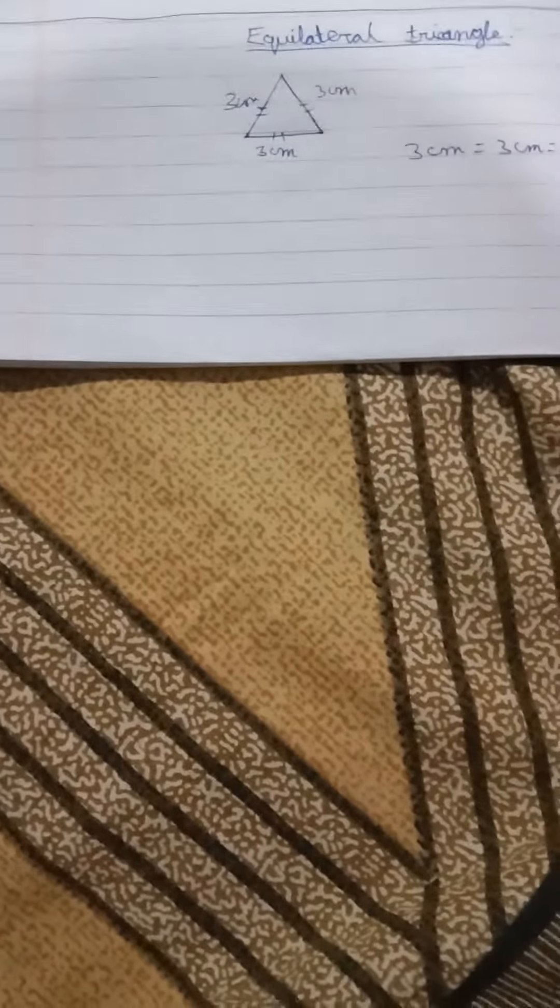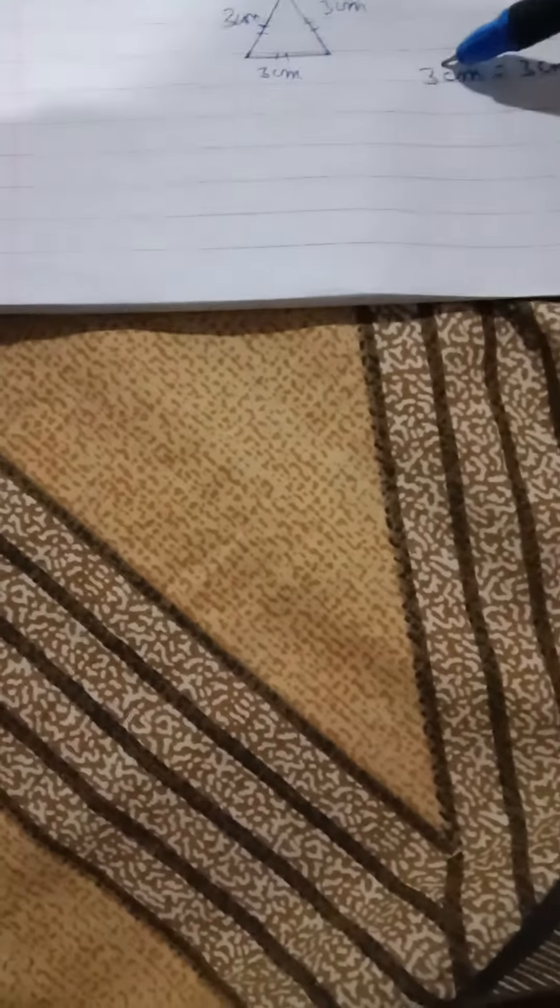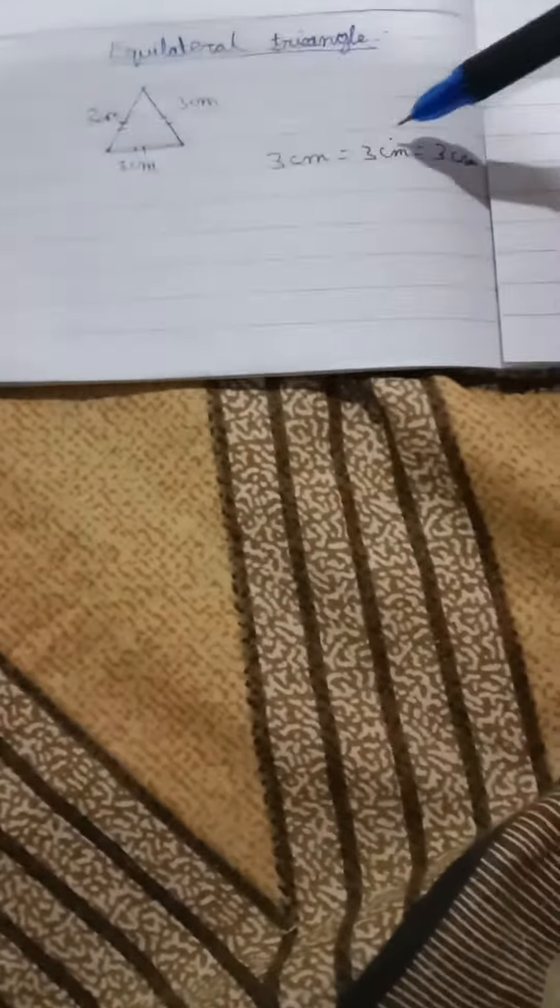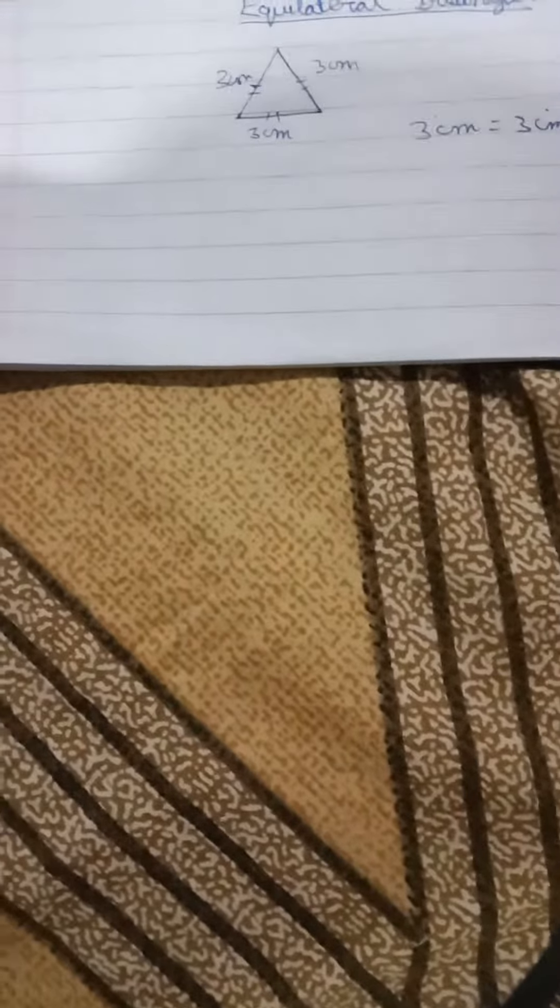We know what is a triangle - a polygon with three sides. Now, 3 centimeters equals 3 centimeters equals 3 centimeters. Here all sides are equal. So if someone asks what is an equilateral triangle, you may say a triangle with all sides equal in length is called an equilateral triangle. I hope you understood this topic, friends.